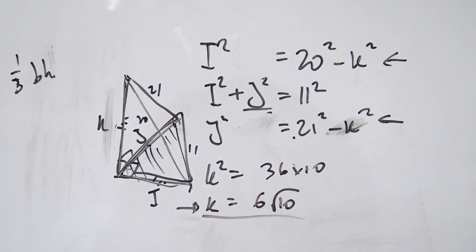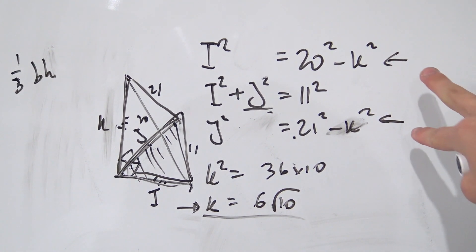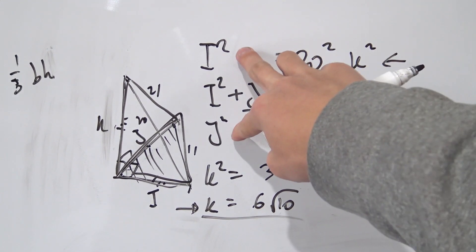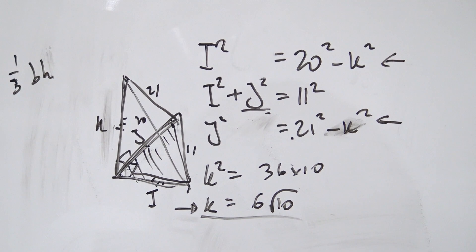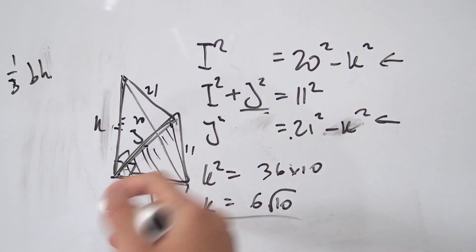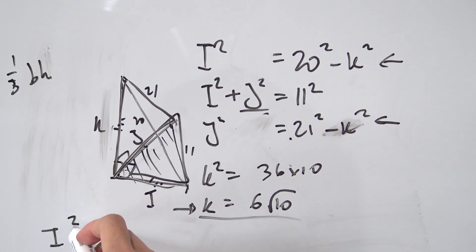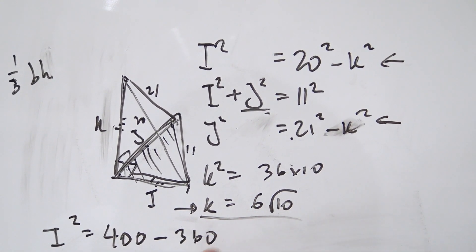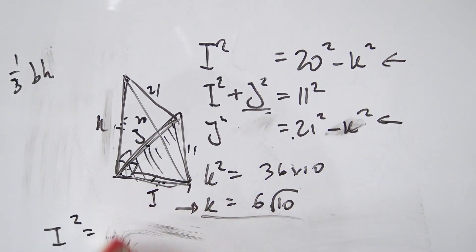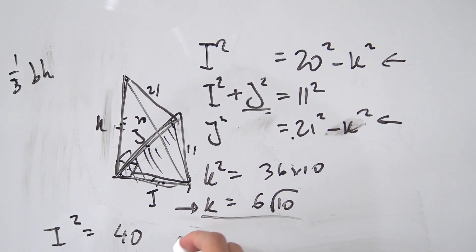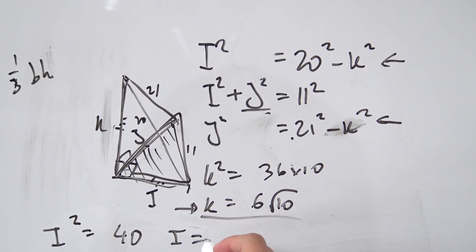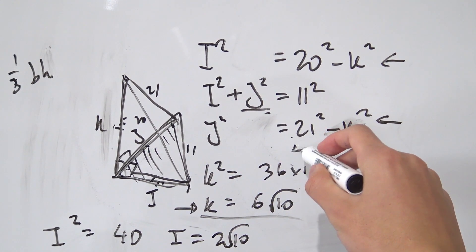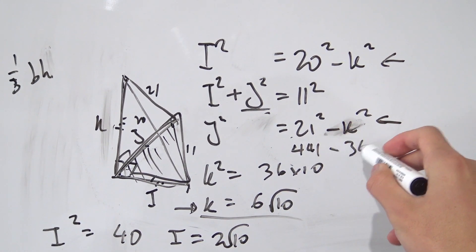And you see we've figured out one of those quantities right there. Now all we have to really do is substitute it back into these two equations right here. Because notice they both have K's in them. And then we can solve directly for I squared and J squared. So putting this into this first equation here, we're going to get I squared being equal to 400 minus K squared, but that was 360. So 400 minus 360, that is exactly 40. And taking the square root, that would give us I being equal to 2 root 10. And doing the same for J right here, 21 squared, that was 441. Minus K squared, we know that was 360.